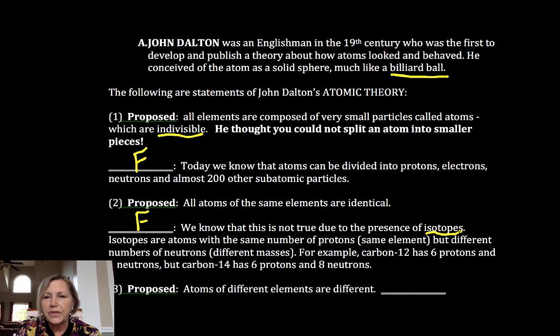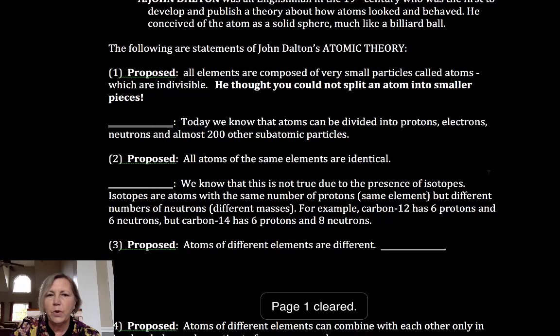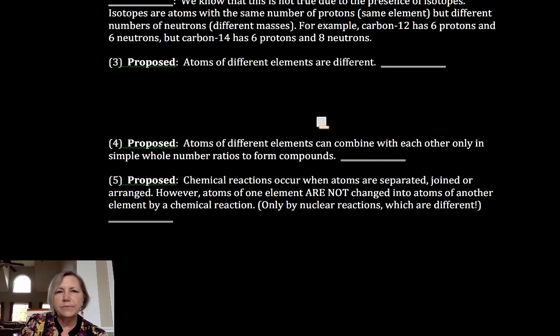And we now know that's false. And that's because of the presence of something called isotopes. And those are forms of elements with different masses. And I will talk more in detail about that. But the point is, we have carbon with a mass of 13, carbon with a mass of 12, carbon with a mass of 14. So they are not all identical. So that's the key point there. More about isotopes later. He proposed atoms of different elements are different. And that is true.